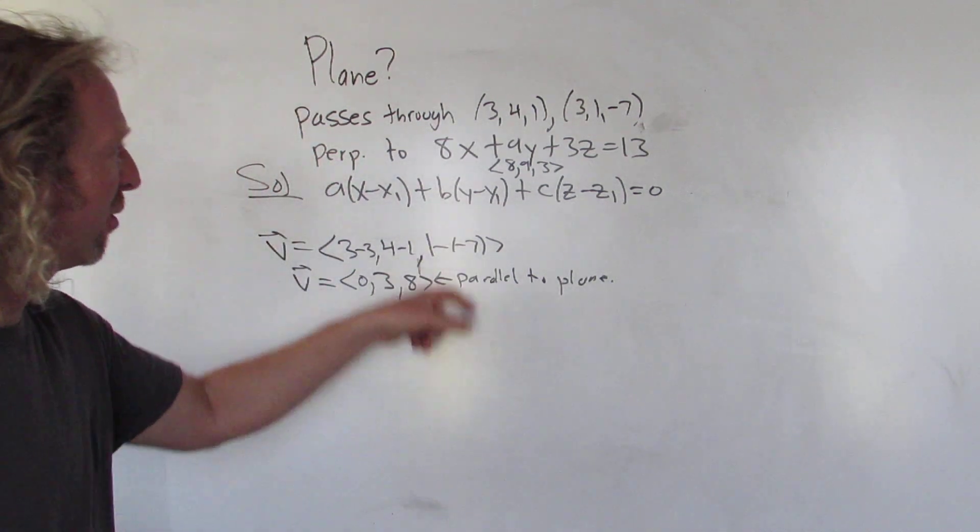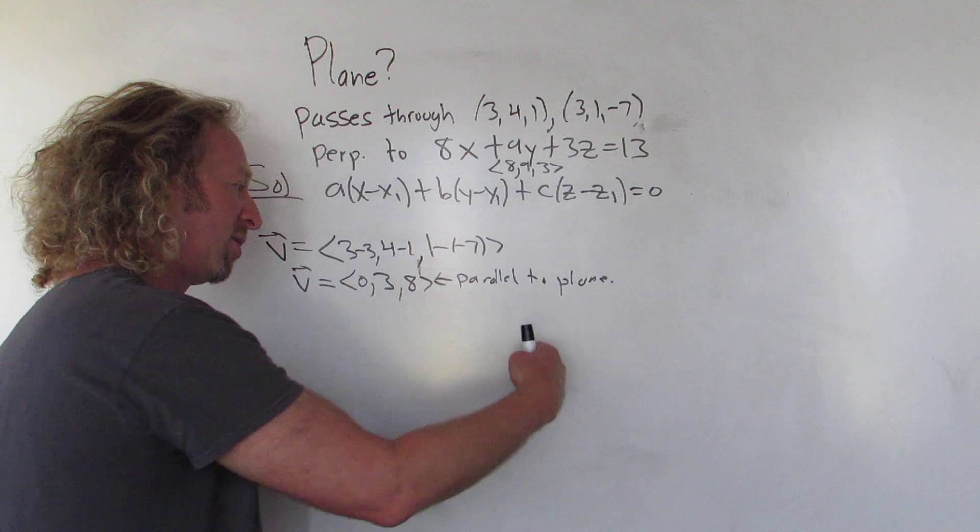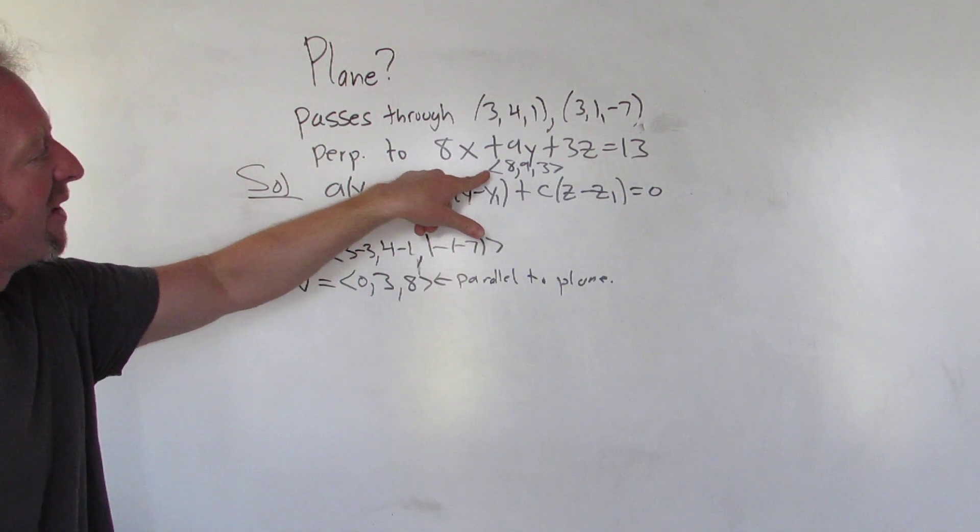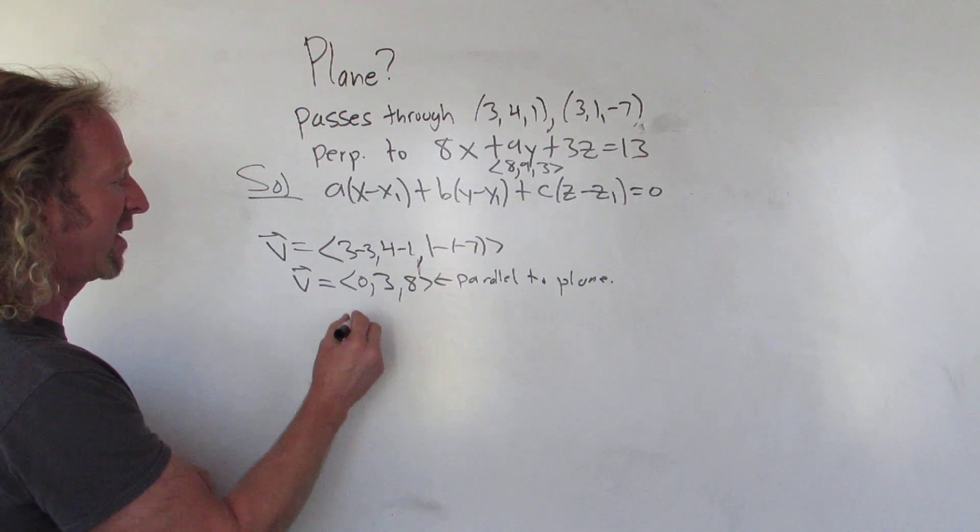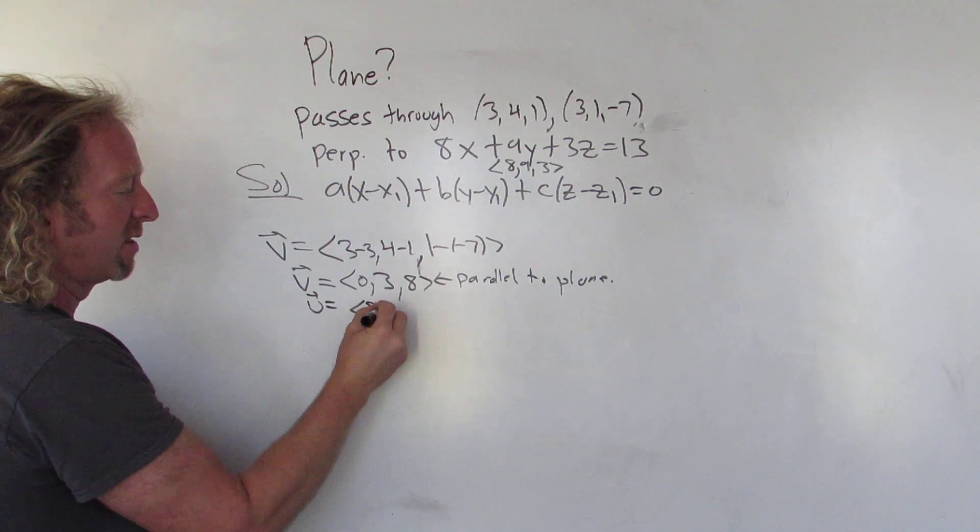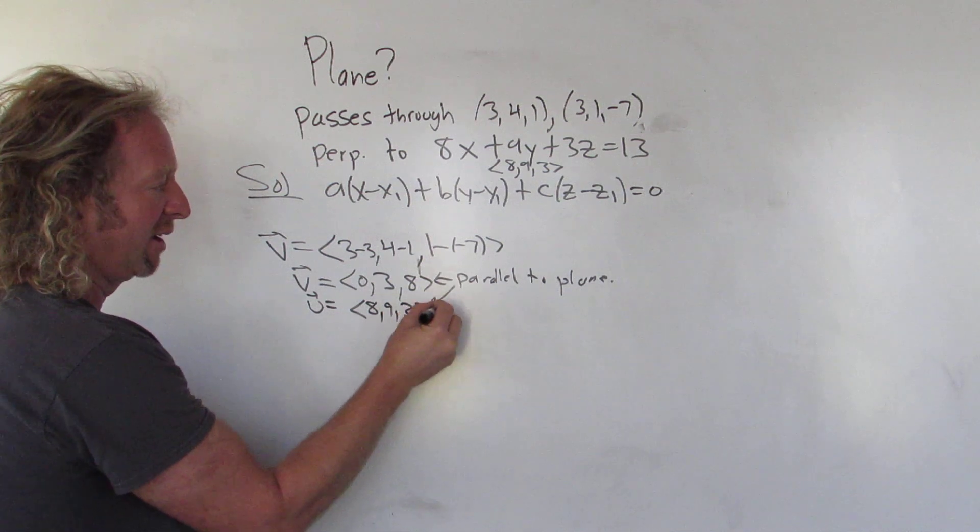Again, if this board is this plane here, then our plane is perp. This vector is perp. Oh look, they're parallel. So this vector is parallel to our plane. So we have another vector. I'll call it u. Just give it a name. 8, 9, 3. And this is also parallel to our plane.